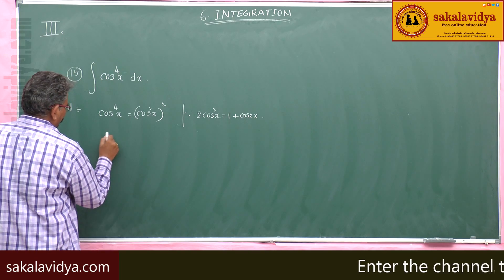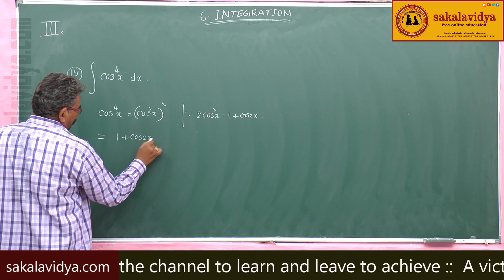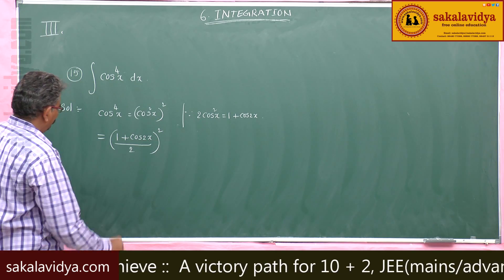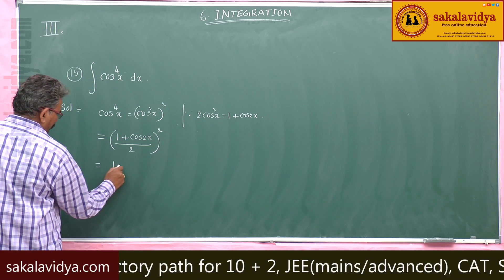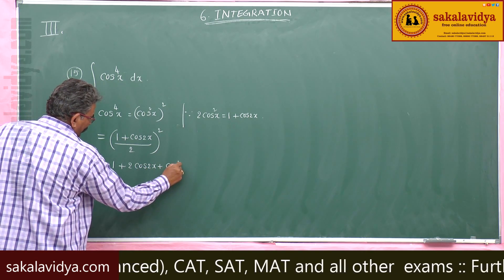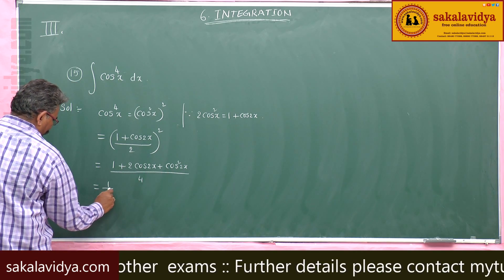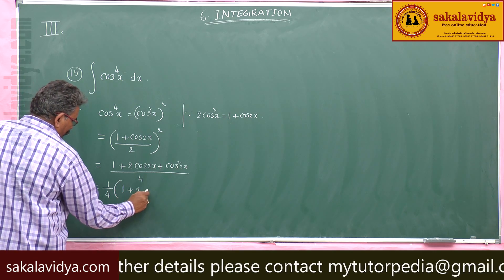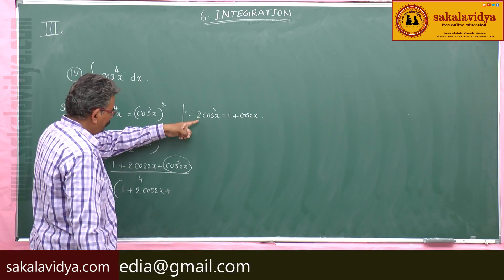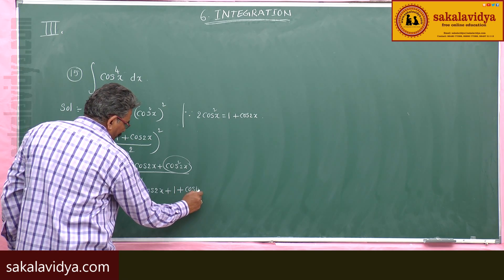We have the formula 2 cos² x equals 1 plus cos 2x, so cos² x equals (1 plus cos 2x) by 2. Substituting, cos⁴ x becomes (1 plus cos 2x) by 2 whole square, which expands to 1 plus 2 cos 2x plus cos² 2x, all divided by 4. Then cos² 2x is replaced by (1 plus cos 4x) by 2.